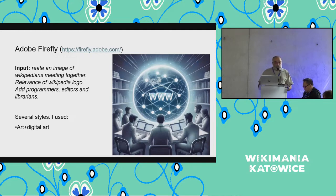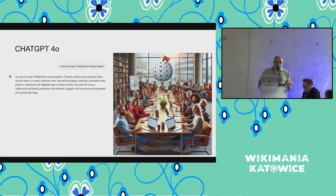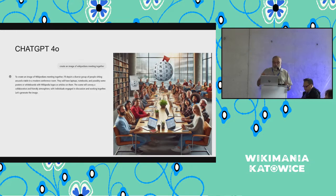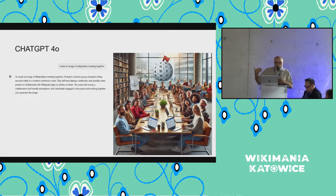Adobe Firefly is very good for some kinds of styles, for instance digital art — this is the result. But honestly, very interesting is the result of ChatGPT. This was the first result — you can see on one side my chat and the other side the result. I wrote 'create an image of Wikipedians meeting together' — a very short sentence — and it already gave a very good result. Also describing the image. While other tools just generate an image, ChatGPT is very interactive.